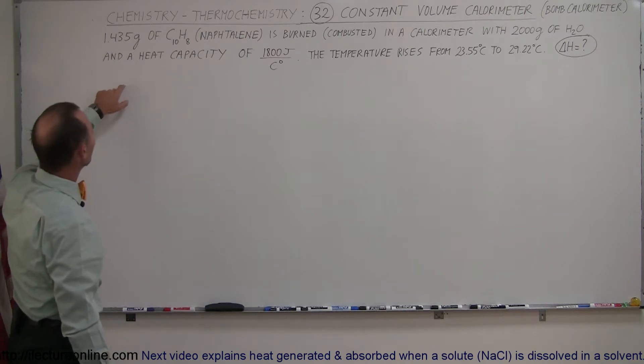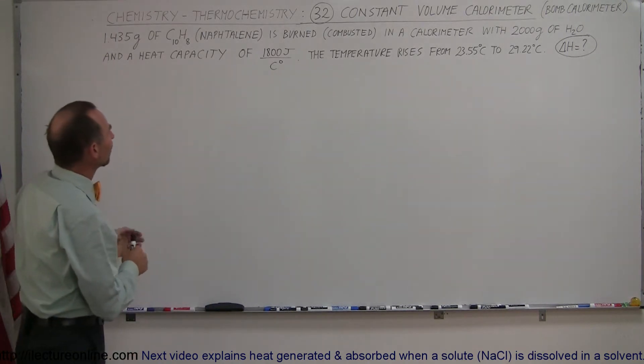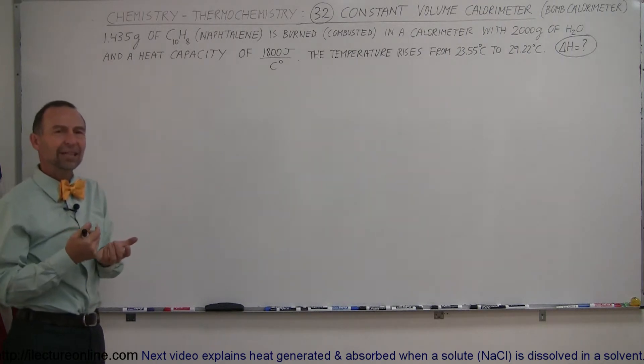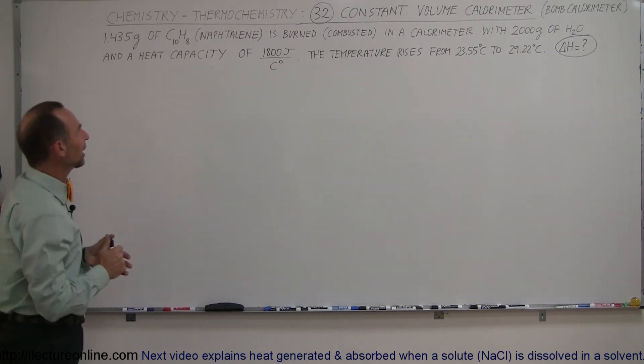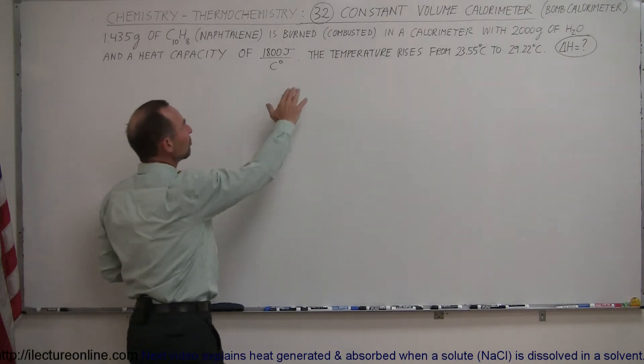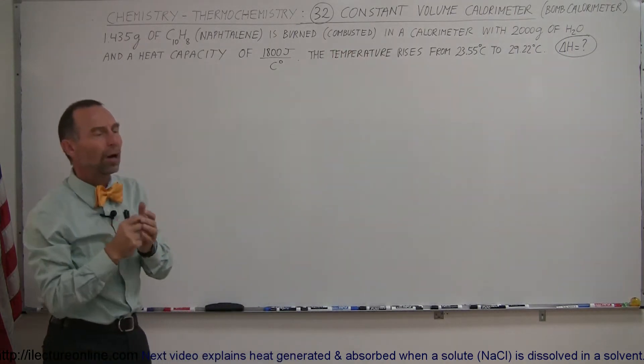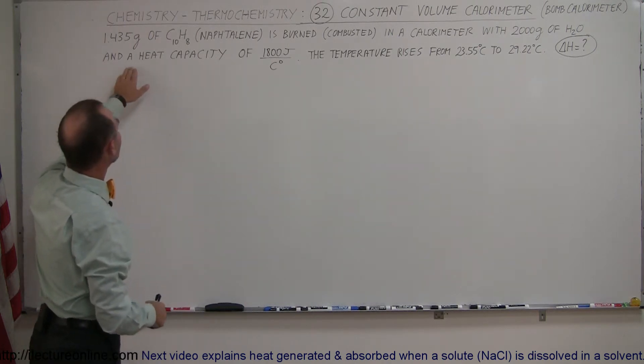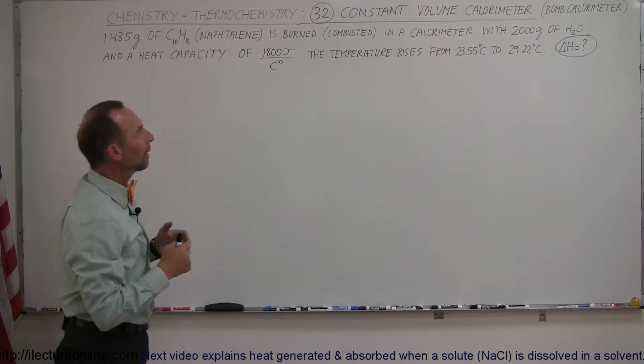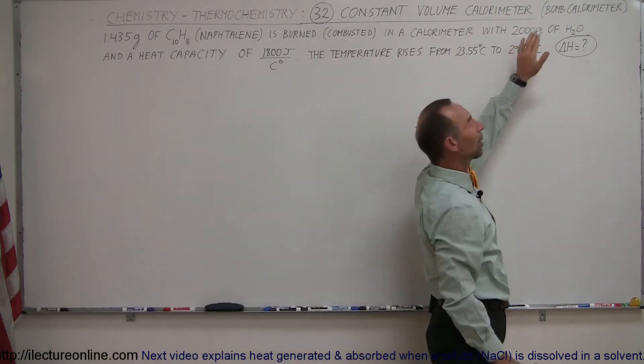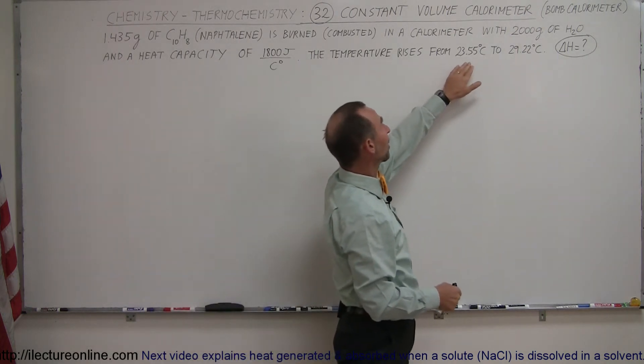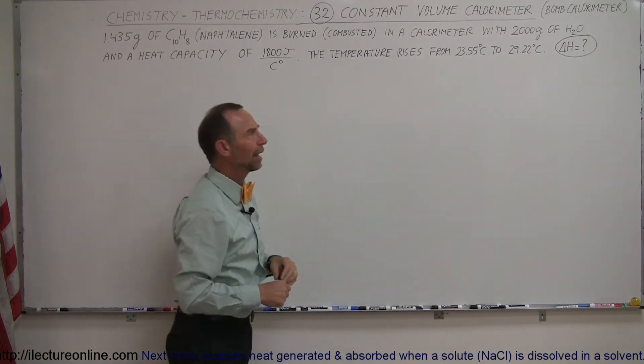Here we have gasoline, well a component of gasoline, called naphthalene, C10H8, probably a component of gasoline. I remember my grandfather calling gasoline naphtha, which comes from the chemical naphthalene. Let's say we have 1.435 grams of that and we burn it, which means we combust it in a calorimeter with 2,000 grams of water, and the heat capacity of the calorimeter is an additional 1,800 joules per centigrade degree. That means we're going to be heating up the calorimeter and the water in the calorimeter, so we have to account for both. The temperature of the calorimeter and the water rises from 23.55 degrees centigrade to 29.22 degrees centigrade, and from that we should be able to figure out what delta H is.